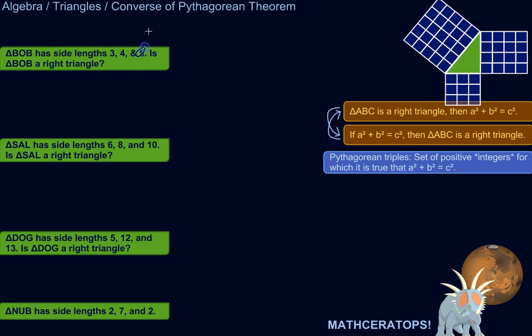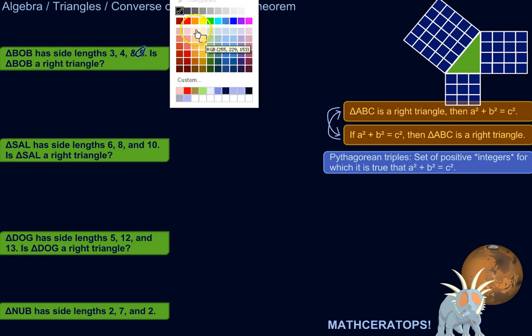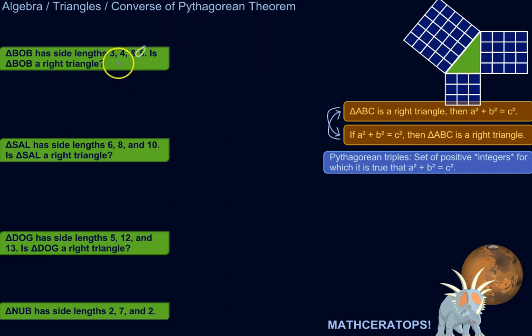So we'll call 5 C. Alright, so let's see if this is true. 3 squared plus 4 squared equals, that's a question mark because it might not, 5 squared. Is this true? Alright, well, let's see. So 3 squared is 9, 4 squared is 16.